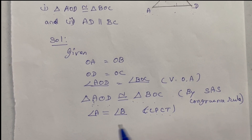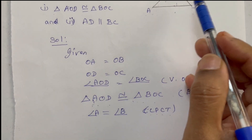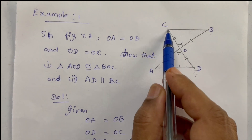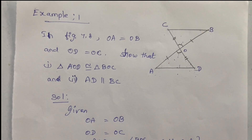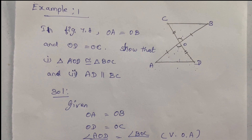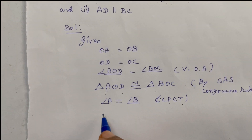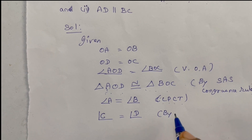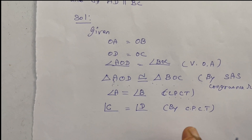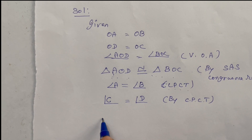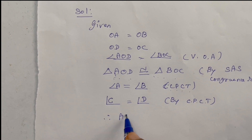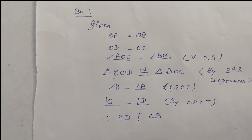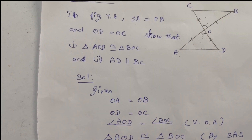The reason is that these two angles are equal: angle A equals angle B, and angle C equals angle D — both by CPCT, corresponding parts of congruent triangles are equal. Angle C equals angle D by CPCT. Therefore, AD is parallel to CB.